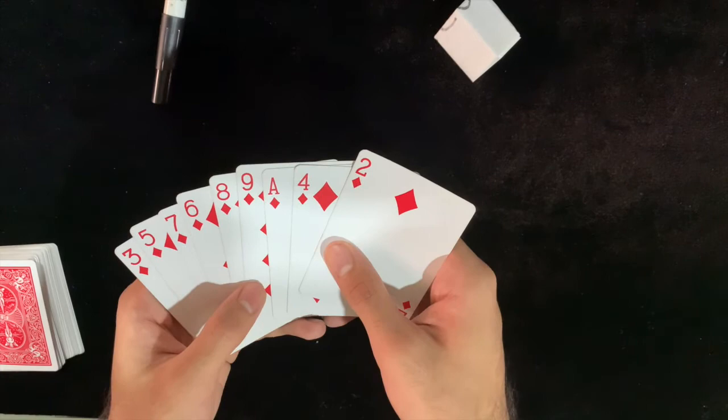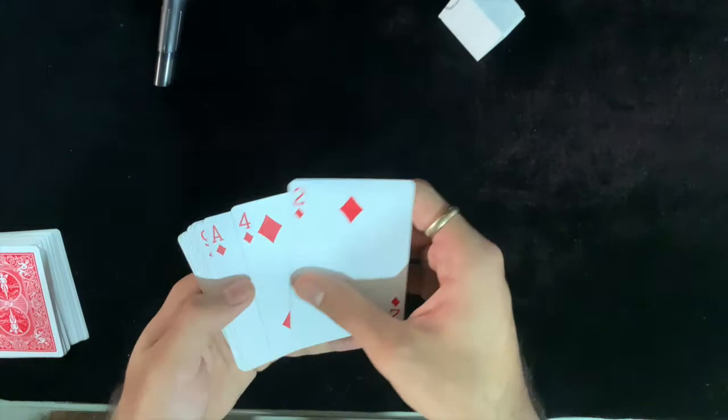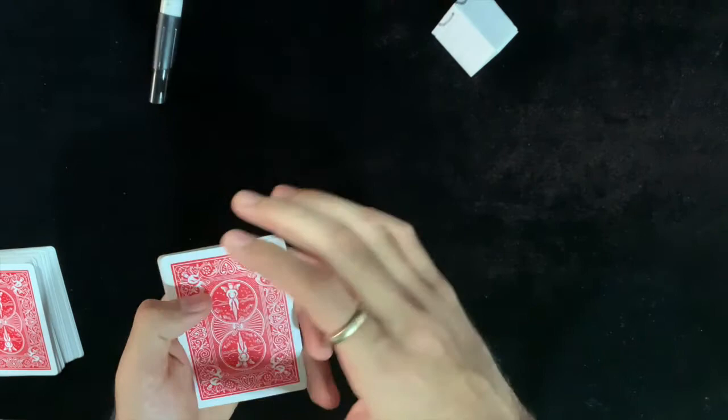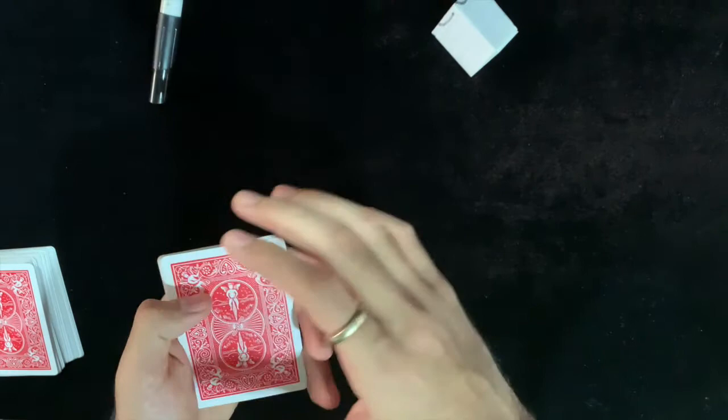So all you need to remember is if they ask you to do the round, like even number of times, like two, four, six, eight, it would come back in this exact same order. And then all you need to do is reveal the cards from left to right. But if they ask you to do it odd number of times, which is one, three, five, you get it. You need to reveal the cards from right to left.